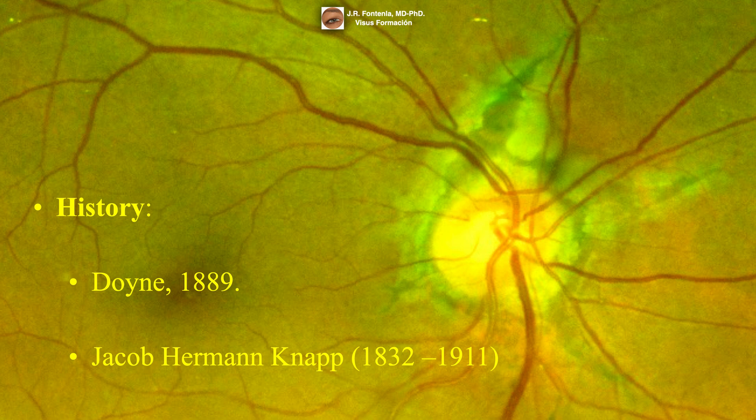Angioid streaks were first described in 1889 by Doin, but the term angioid streaks was first used by the German-American ophthalmologist Jacob Hermann Knapp in 1892, so they are also known as Knapp streaks.